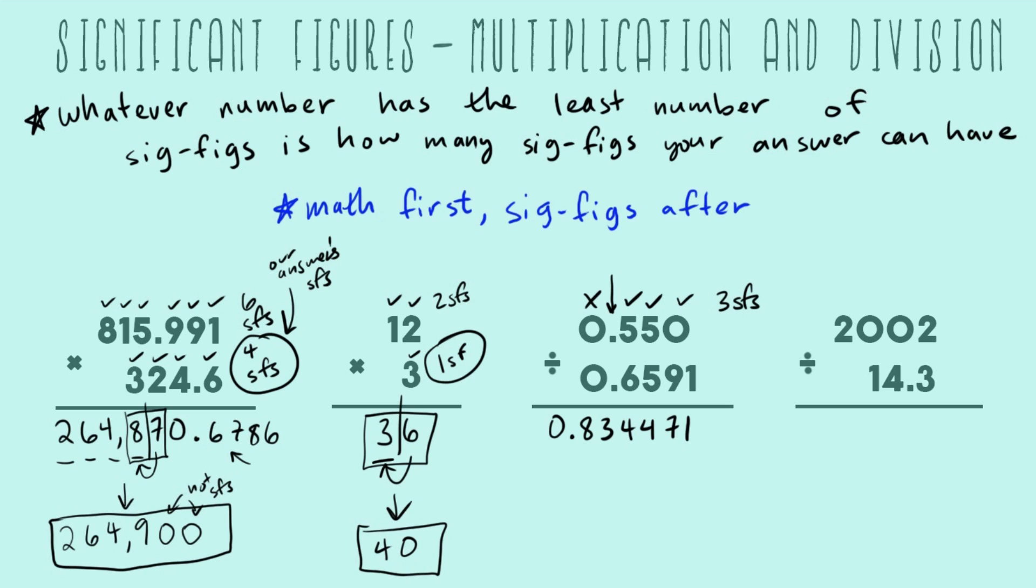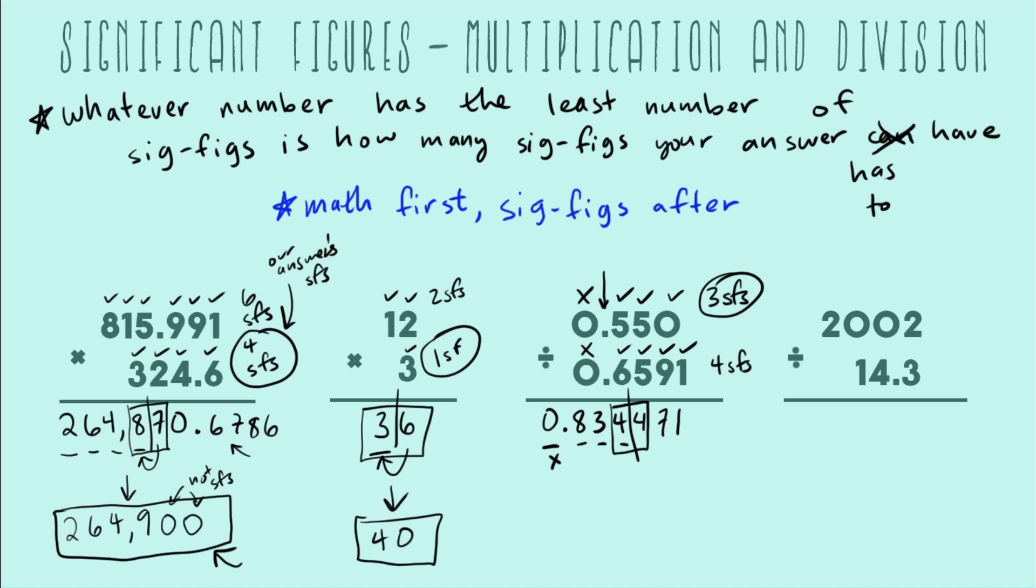Our second number has another leading zero that doesn't count, and we have a bunch of non-zeros afterwards that all count. This number has four sig figs. Whichever one has less is three in this case, so our answer can only have three sig figs. When we're rounding, we don't count this zero because that is not a sig fig. It's just a placeholder saying this number is less than one. We start right here at this eight: one, two, three, four, and that's where we have to cut off to round. We'll end up with 0.834 as our final answer.